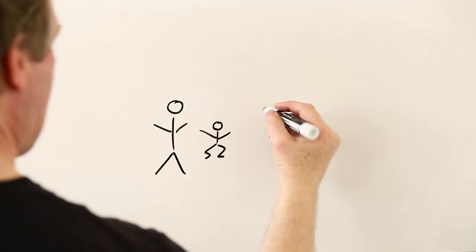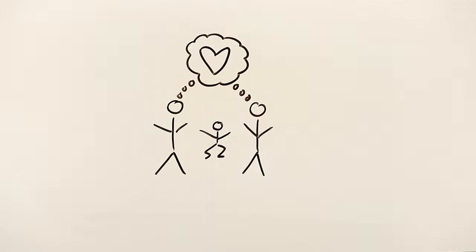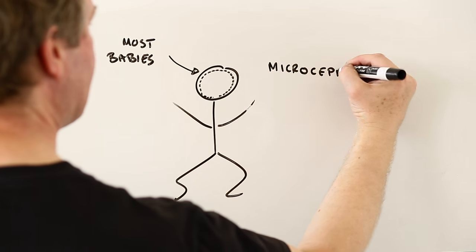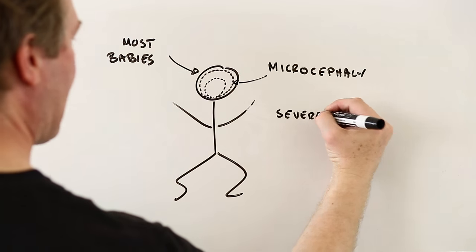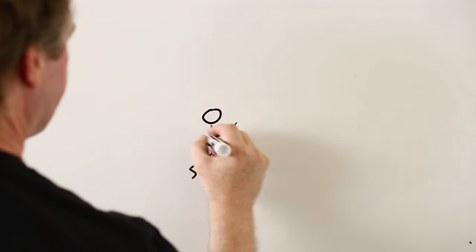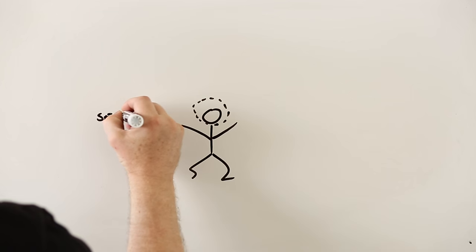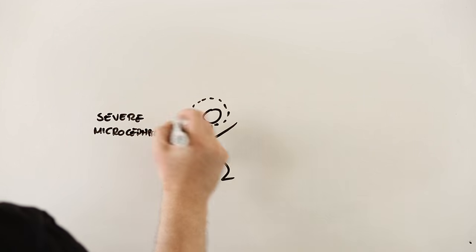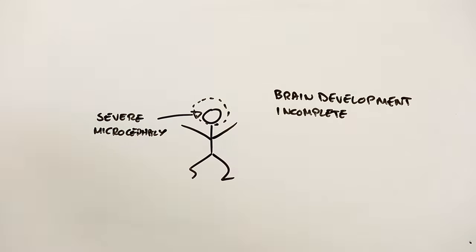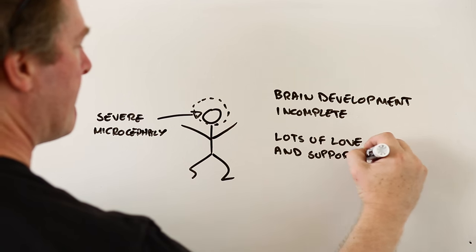Number three: Scary as it might sound, having a child with microcephaly is not the end of the world. Microcephaly refers to babies that are born with a smaller than average head size. Sometimes this can lead to severe disabilities, but often the effects are more manageable. If the microcephaly is really bad, your baby's brain might not develop fully. This leads to a condition called severe microcephaly, and children born with it need a lot of support from their parents and others.